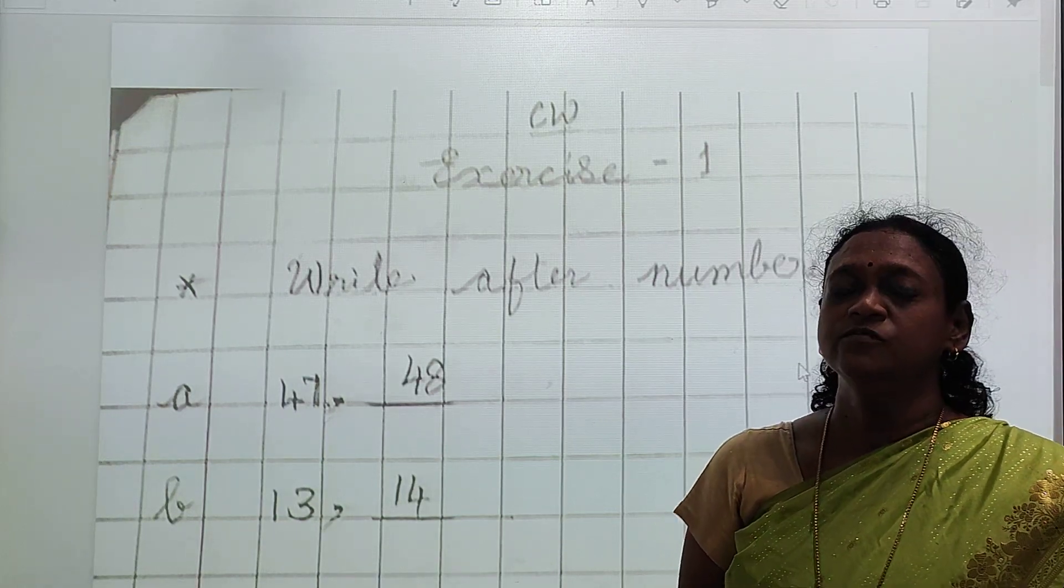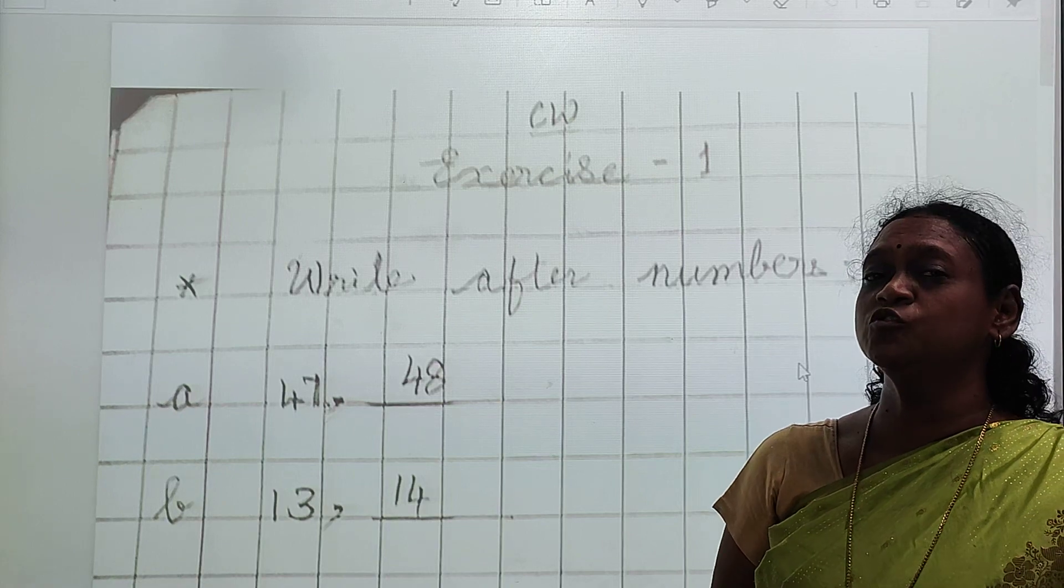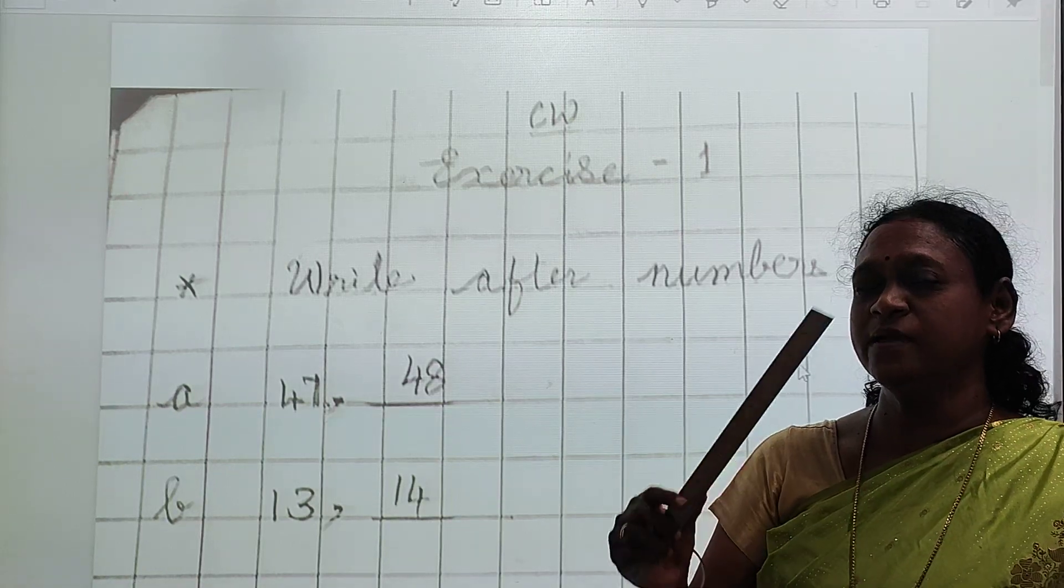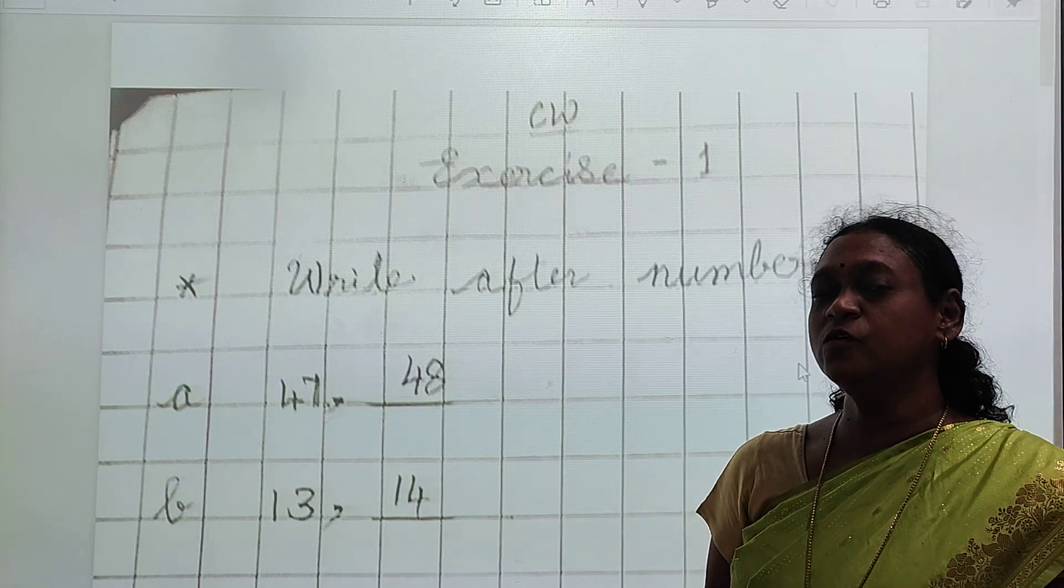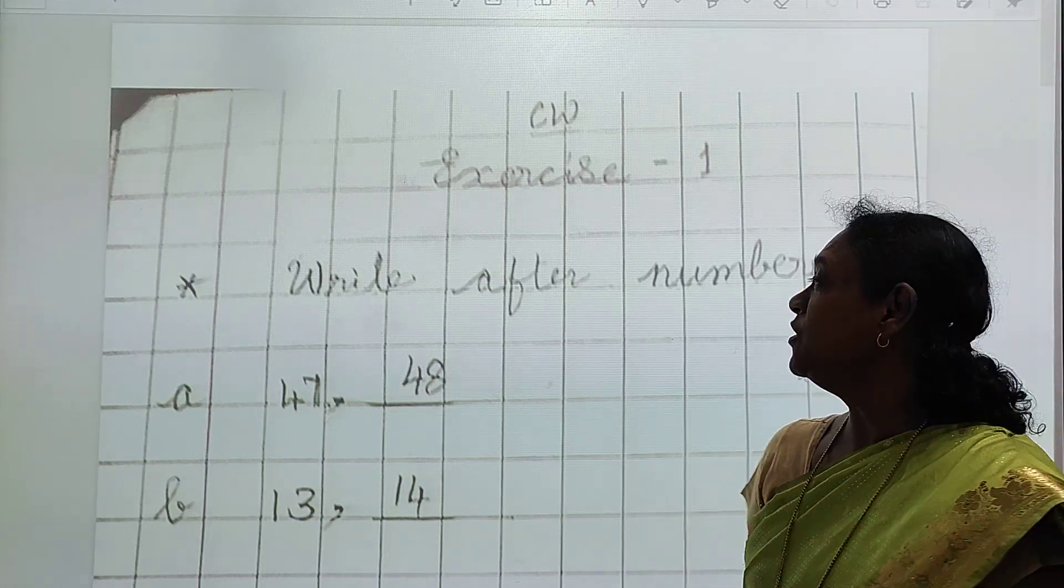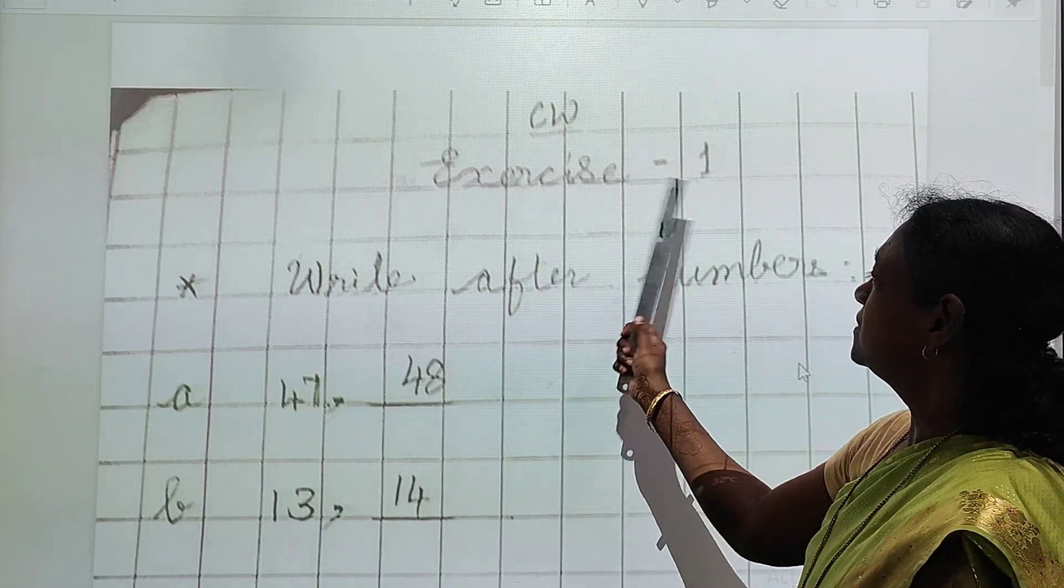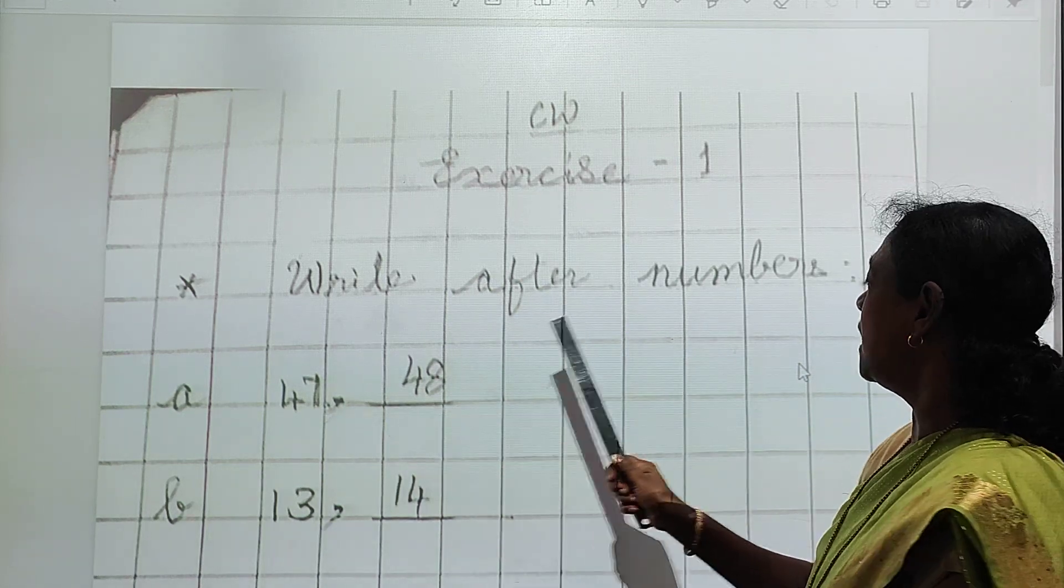After numbers is 1, 2, 3. When we are talking about after numbers, the first number is, the last number is 1, 2, 3. So like that. I am going to teach you few examples. You can see classwork, exercise 1, write after numbers.